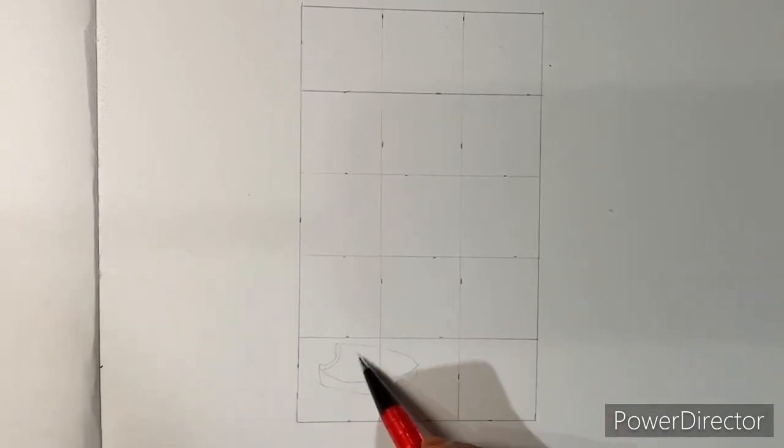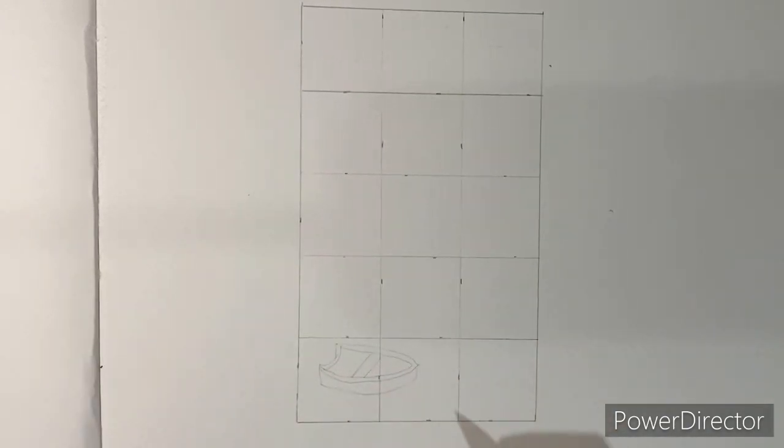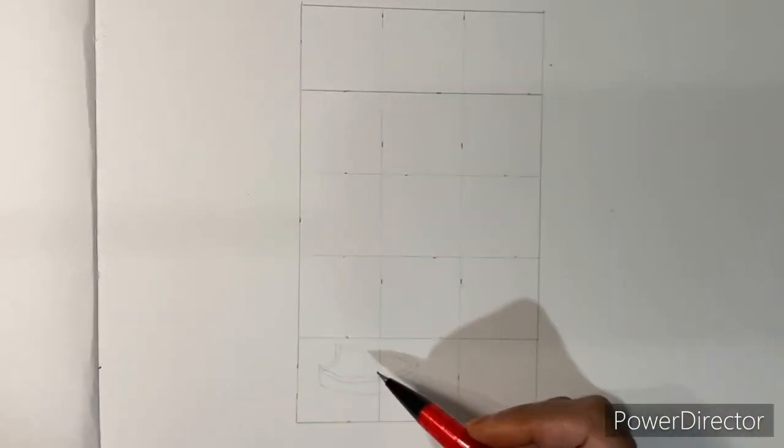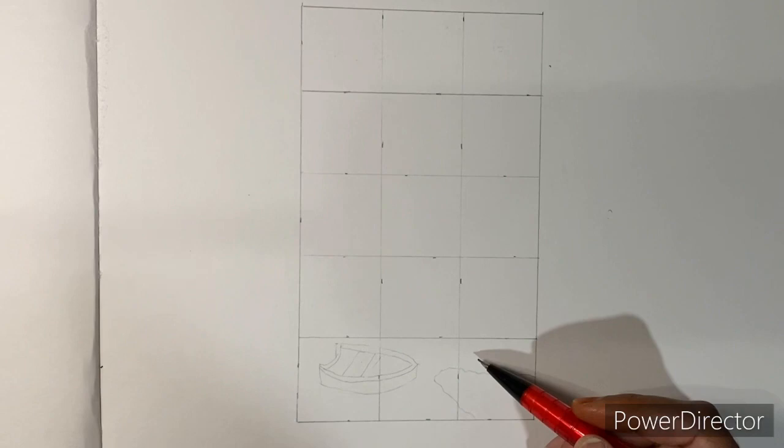As usual, once you're done with the grids, start with your drawing. Start drawing according to the boxes or according to the grids. And complete the drawing referring to the original picture that I showed you.